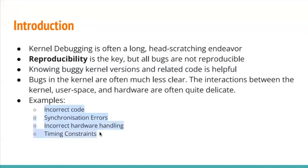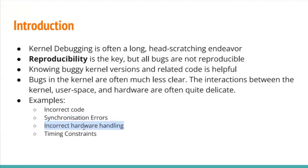Here are some examples of what kinds of problems can occur. One is writing incorrect code — that is an obvious problem. A second type is a synchronization problem where we are not handling shared code or critical sections properly, which can corrupt the system. Similarly, if we are not writing correct data to hardware registers, it can lead to kernel corruption. There are also timing-related issues and other multiple kinds of problems.